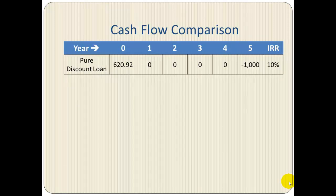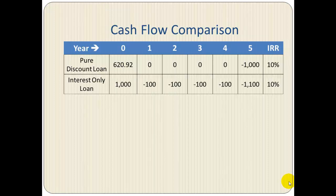With a pure discount loan, the upfront cash flow is six twenty point ninety-two, and upon maturity the borrower pays one thousand dollars. The internal rate of return on this loan is ten percent, meaning the borrowing cost is ten percent. For an interest-only loan, the upfront amount is a one-thousand-dollar inflow, then one-hundred-dollar outflows each year, and the final cash outflow includes the interest payment and principal payment of one thousand dollars.